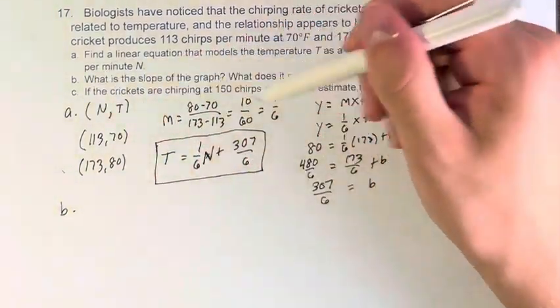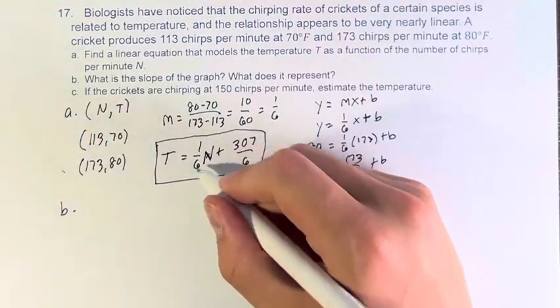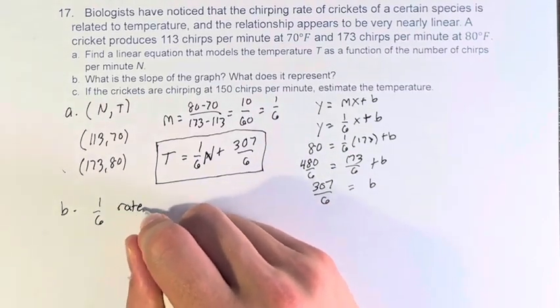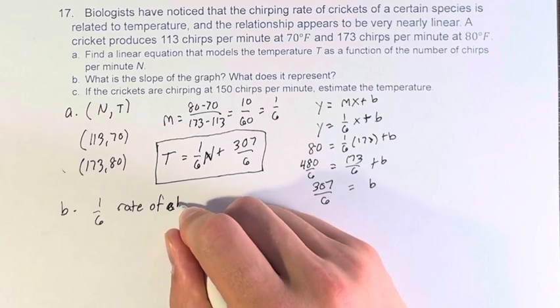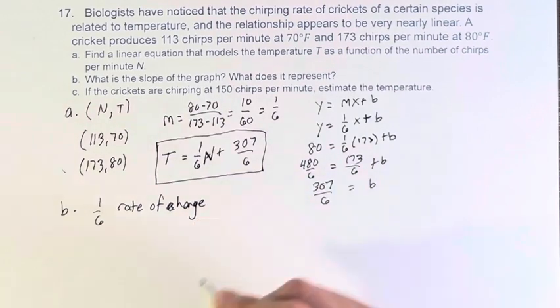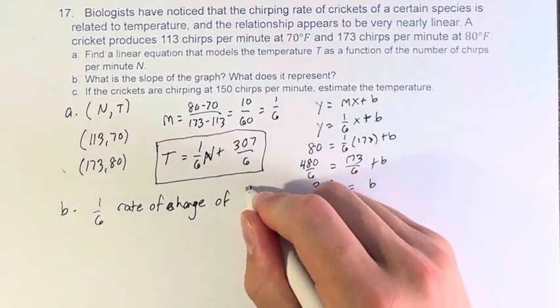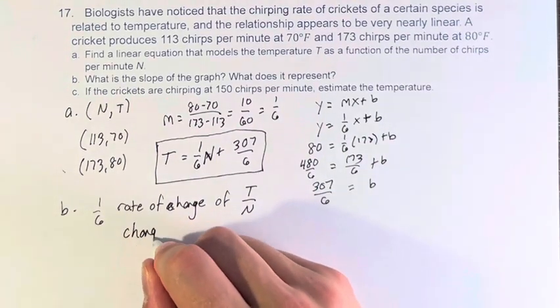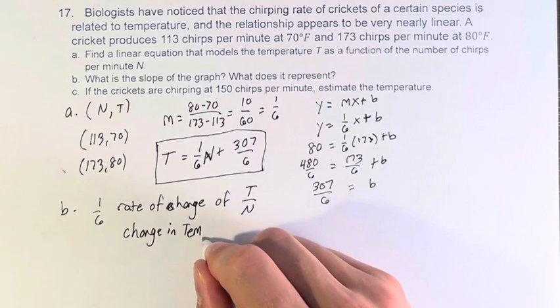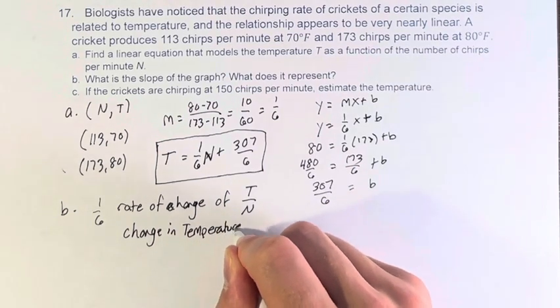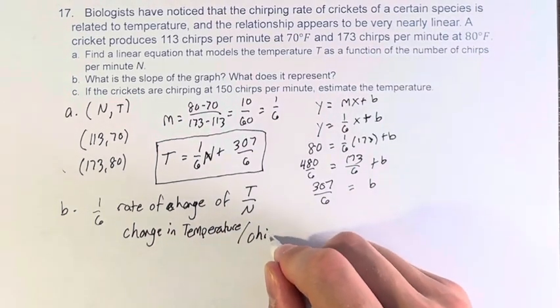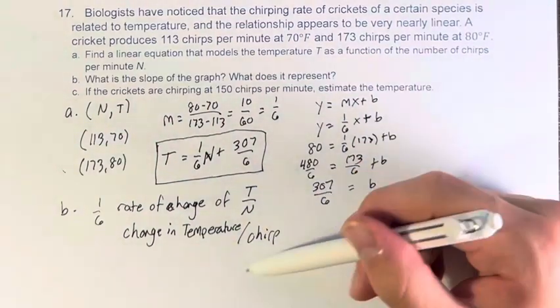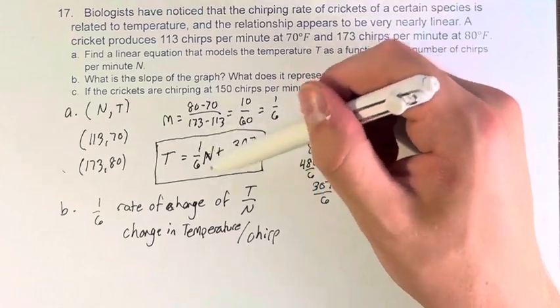Part b: what is the slope of the graph and what does it represent? Well the slope is the coefficient of N, 1/6, and is the rate of change of T over N which is the change in temperature per chirp. So if we increase by one chirp we go up by 1/6 of a degree Fahrenheit.